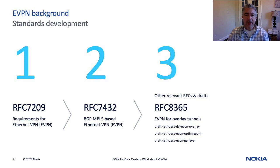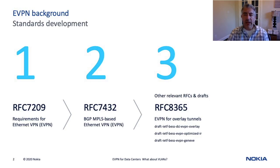eVPN was developed as a new VPN type to address layer 2 and layer 3 services. The details of eVPN and its various use cases are covered in a number of RFCs which you will see here on the screen. You'll notice that RFC 7432, for example, is titled BGP MPLS Ethernet VPN. Like other VPN types, eVPN is an address family within BGP. MPLS is mentioned here as the data plane encapsulation, but eVPN can be paired with a number of different encapsulation types such as VXLAN. This by itself is an important topic for data centers and something we plan to cover in a future video.